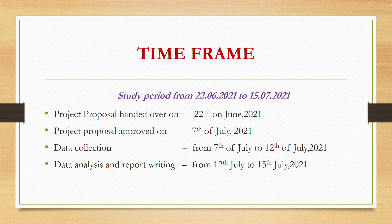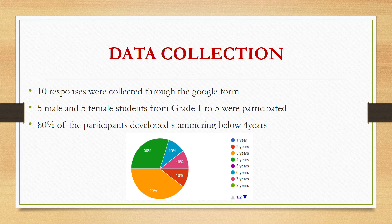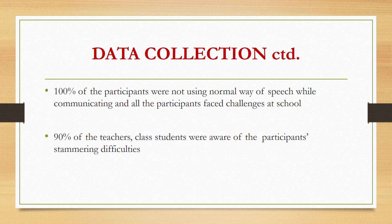Time frame: from 22/6/2021 to 15/7/2021. Data collection: 10 responses were collected through the Google Form. Five male and five female students from Grade 1 to 5 participated. 80 percent of the participants developed stammering below four years of age. 100 percent of the participants were not using a normal way of speech while communicating, and all participants faced challenges at school.